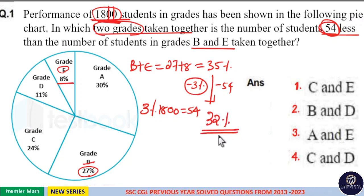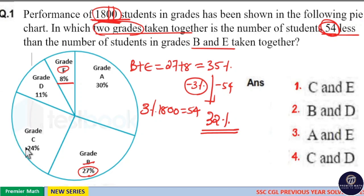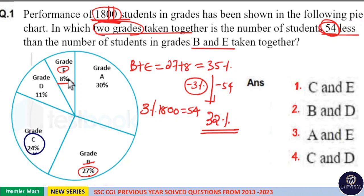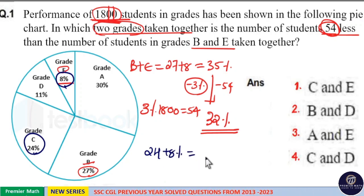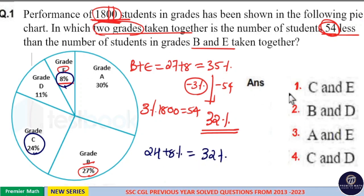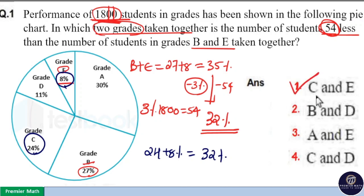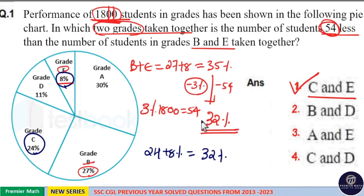So, two grades should be equal to 32 percentage. Here, if you look at it, 27 minus 3 is 24. So, if I take 24 percentage and 8 percentage, which should be equal to 32 percentage. So, option 1 is your answer — that is C and E taken together. C and E taken together is 32 percentage, which is 3 percentage less than B and E taken together.